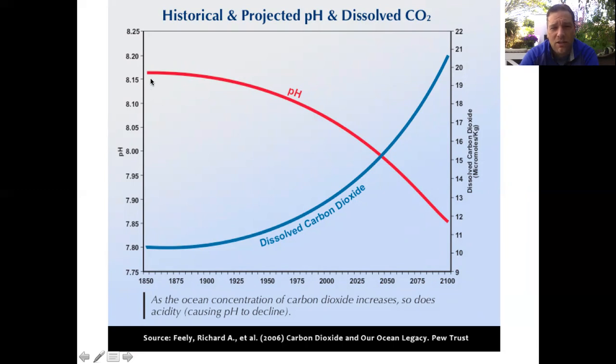As carbon dioxide increases, we notice that pH decreases. So it is here near 8 and it is starting to decline. And now, again, when a pH number goes from 8 and then goes lower, it is becoming more acidic.